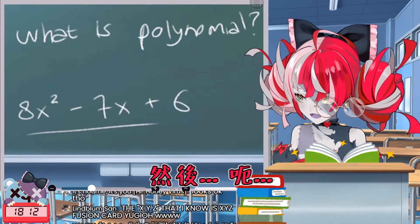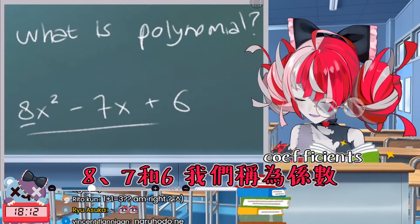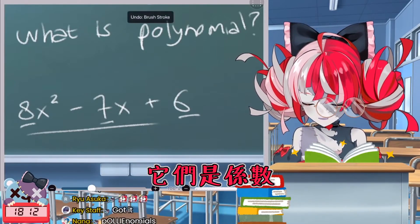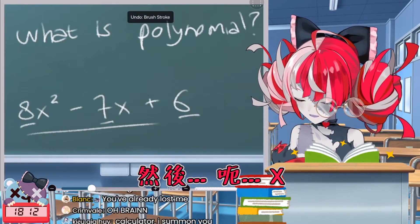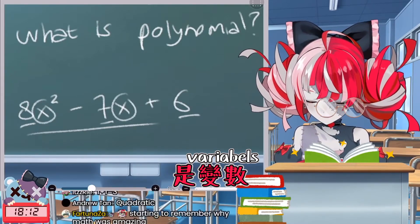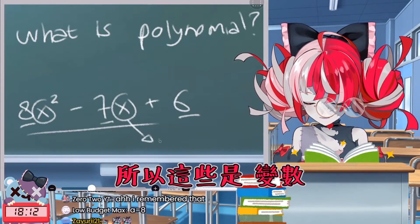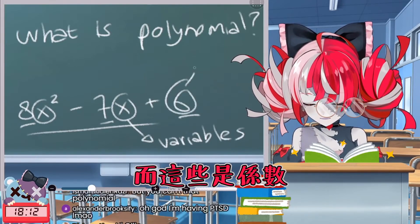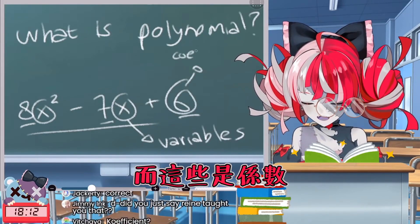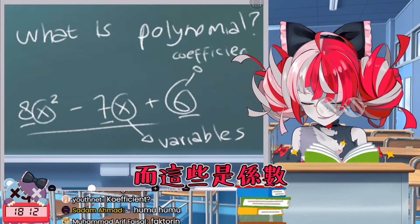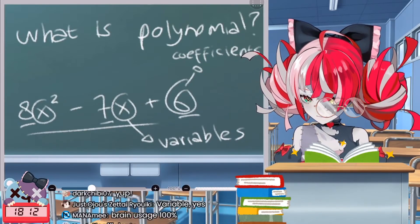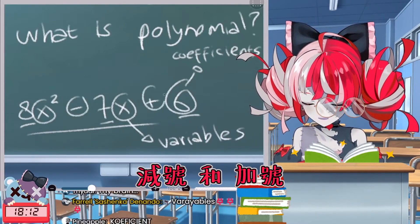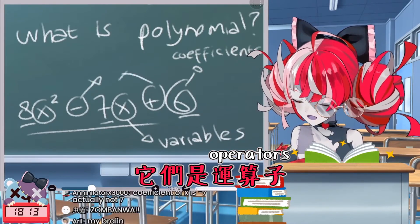Eight, seven, and six — they are called coefficients, while x is a variable. These are variables, and those are coefficients. The minus and the plus are called operators.